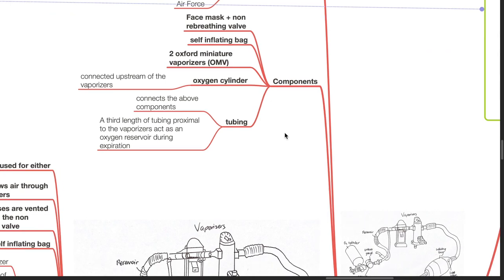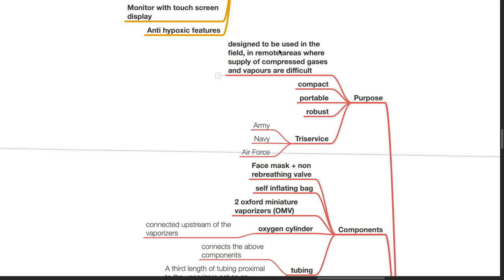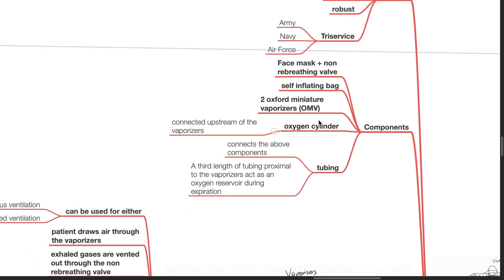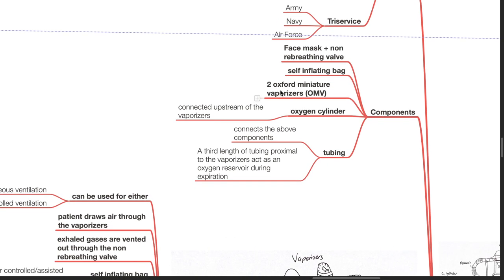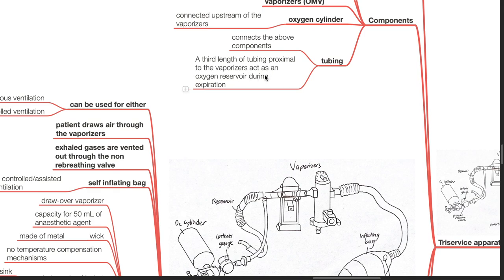Tri-service apparatus. It is designed to be used in the field in remote areas where supply of compressed gases and vapors is difficult. It is compact, portable and robust, and tri-service refers to Army, Navy and Air Force. Components: it consists of a face mask and non-rebreathing valve, self-inflating bag, two Oxford Miniature Vaporizers known as OMV, an oxygen cylinder connected upstream of the vaporizer, and tubing which connects the above components. A third length of tubing proximal to the vaporizer acts as an oxygen reservoir during expiration.